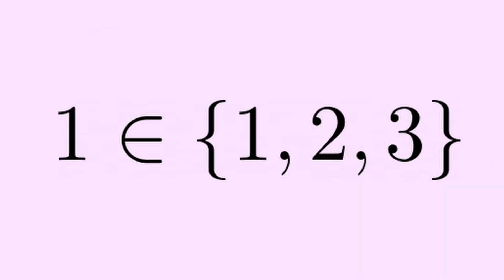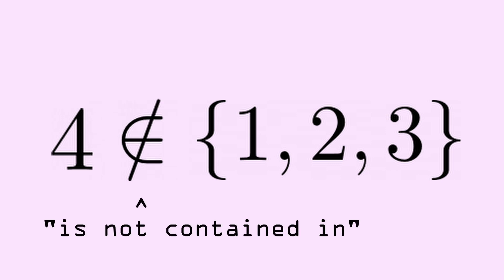So, for example, if I want to communicate that number 1 is in this set, then we can write this down. We can also replace the number 1 on the left side with 2 or 3 and the statement will remain valid. If we put anything else like the number 4, then this will become an invalid statement. We can fix this by placing a diagonal strike on the symbol in the middle. Now, it means is not contained in. So, the statement now reads, 4 is not contained in the set that contains 1, 2, and 3.